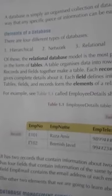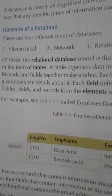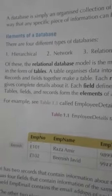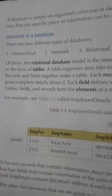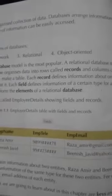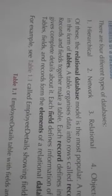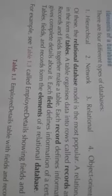Today our topic is Elements of a Database. There are four different types of a database: first, hierarchical; second, network; third, relational; fourth, object-oriented. Of these, the relational database model is the most popular.